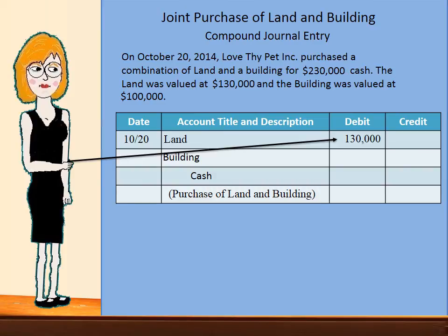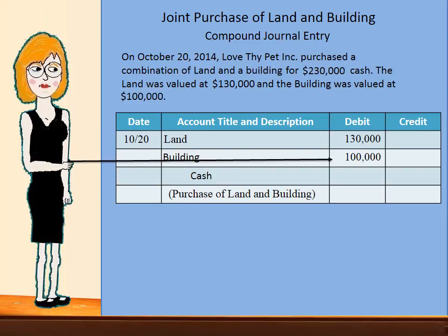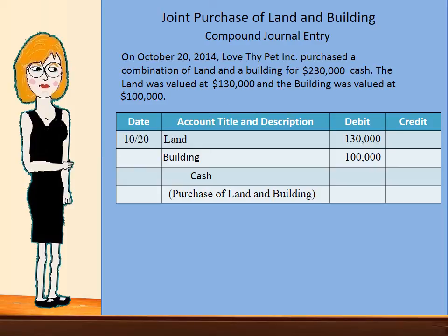So we will debit, thereby increasing the land account for $130,000. And we will debit the building account for $100,000, indicating that we've increased that asset account by $100,000. The cash will be credited for $230,000, the value of both the land and the building, and we will credit that asset account, thereby reducing the amount of cash we have by paying out.